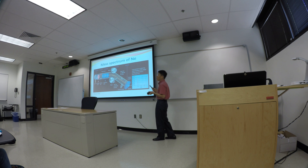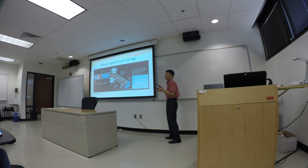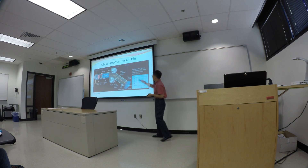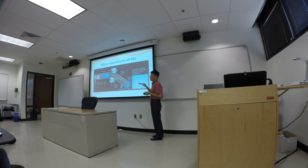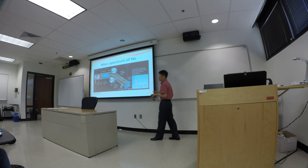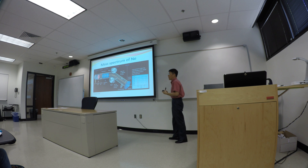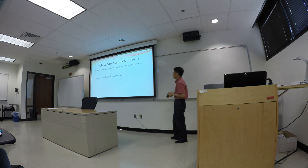How do we get that 20.19-something atomic mass? We have to calculate and figure out the percentage for each isotope. We take the relative mass of each isotope and multiply that by its percentage, then add them all together. That's how we get the number.